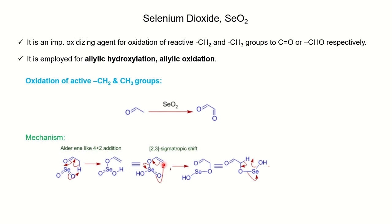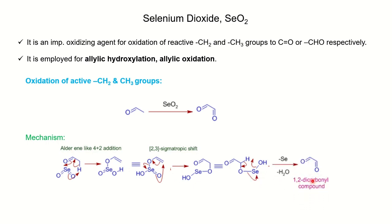The oxygen becomes attached to the carbon with the double bond, and the selenium-oxygen bond breaks simultaneously — a new bond forms as the old bond breaks. This is a pericyclic reaction — a sigmatropic rearrangement. With loss of water and selenium, you get the 1,2-dicarbonyl compound. This is the mechanism for the formation of the dicarbonyl compound whenever you use selenium dioxide.